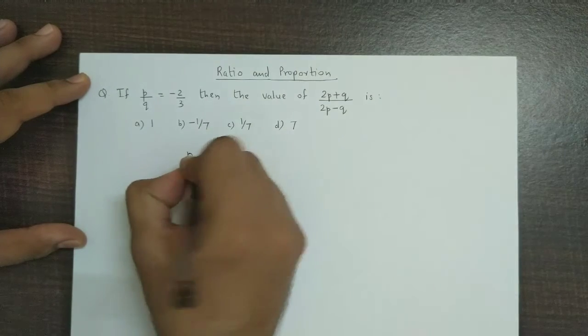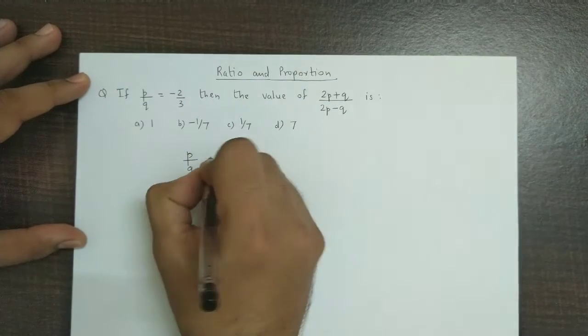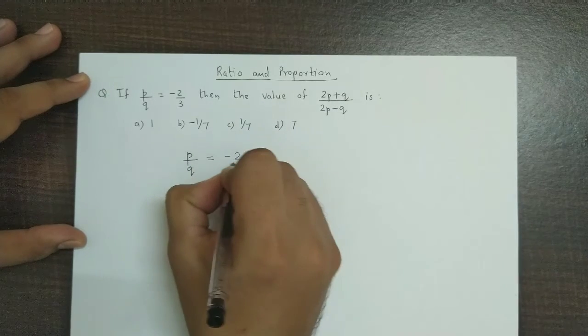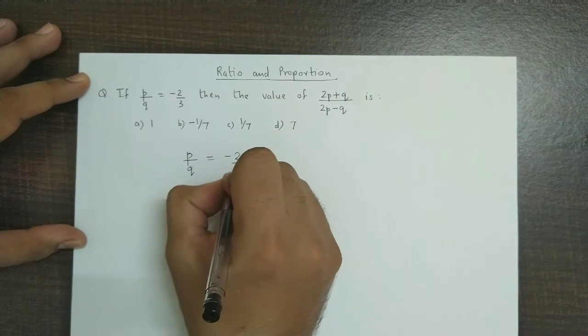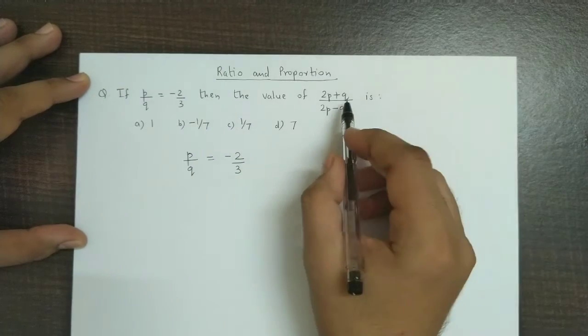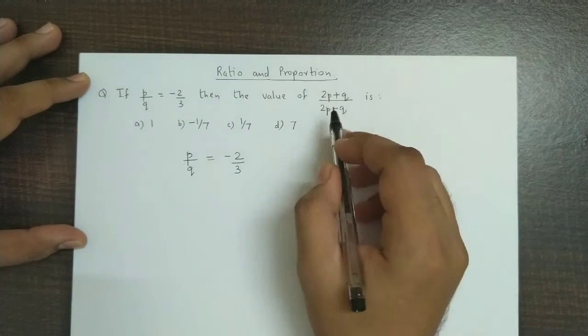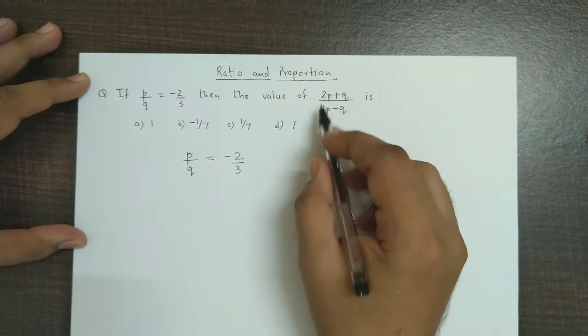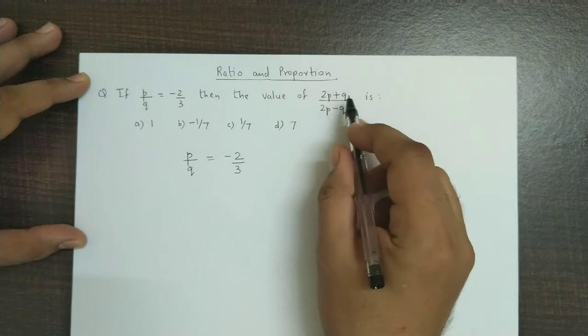Let us consider the given proportion: p/q = -2/3. Now if you observe this part, it is in the form of componendo-dividendo, right? Somewhat related to componendo-dividendo: (2p+q)/(2p-q).